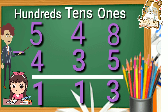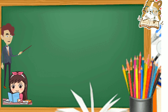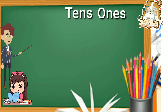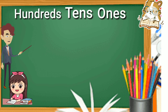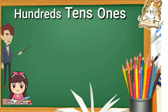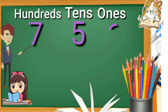Five hundred forty eight minus four hundred thirty five, the answer is one hundred thirteen. Now, dear students, the same way — first we add ones, tens and hundreds on top, and then we put the amount under them that we want to subtract.